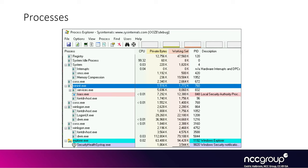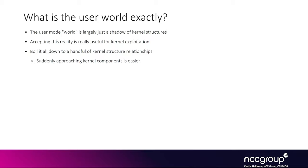You can think of the userland part as a shadow of the actual kernel structures. The kernel is tracking all different processes using EPROCESS structures, and what you see in Process Explorer is just some part of what the kernel is managing. If you think of the kernel as something that just tracks kernel structures, it's relatively easy. The user mode world is largely just a shadow of kernel structures, and the information you see in userland is just part of what the kernel actually stores.